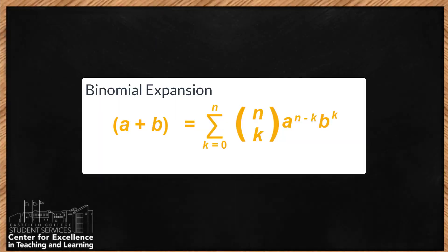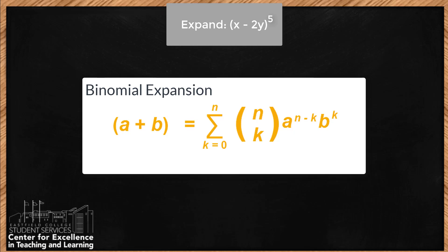The problem is we use the formula of the binomial expansion, and our problem is to expand the binomial raised to the power. The binomial we'll be working to expand is x minus 2y, all raised to the fifth power. From the formula, we need to determine what our a and b are.